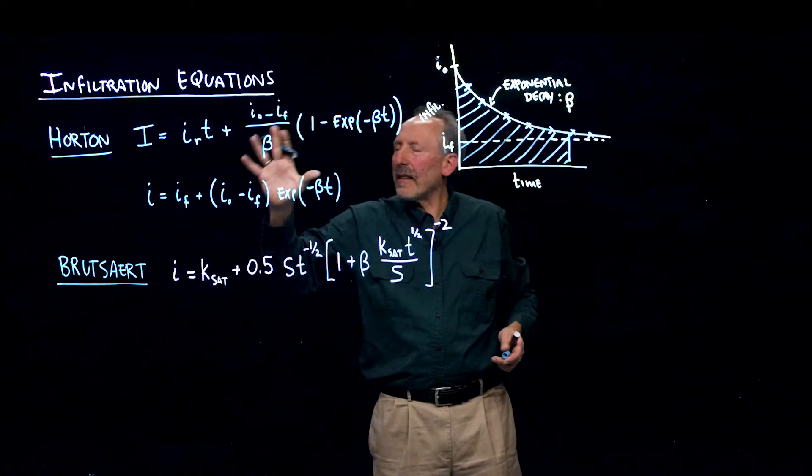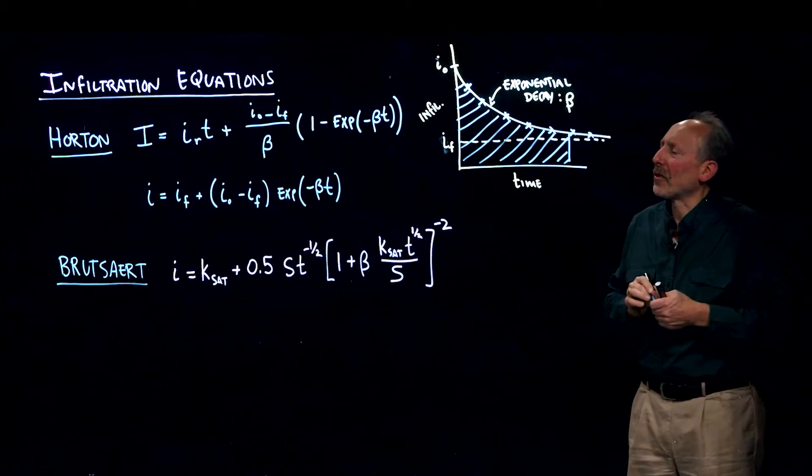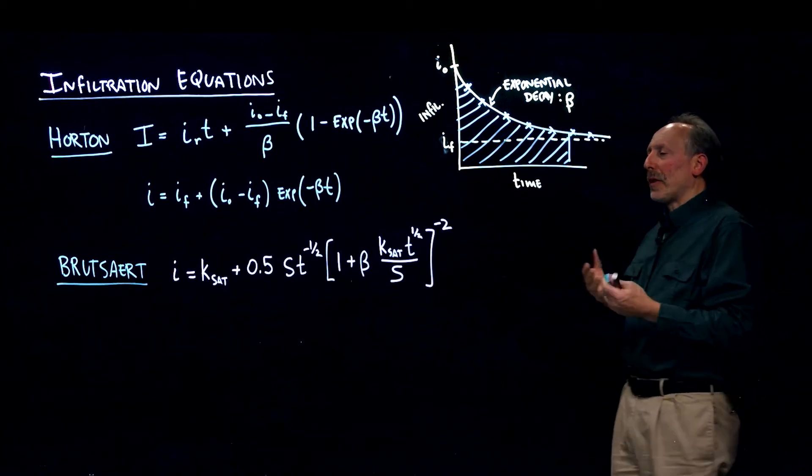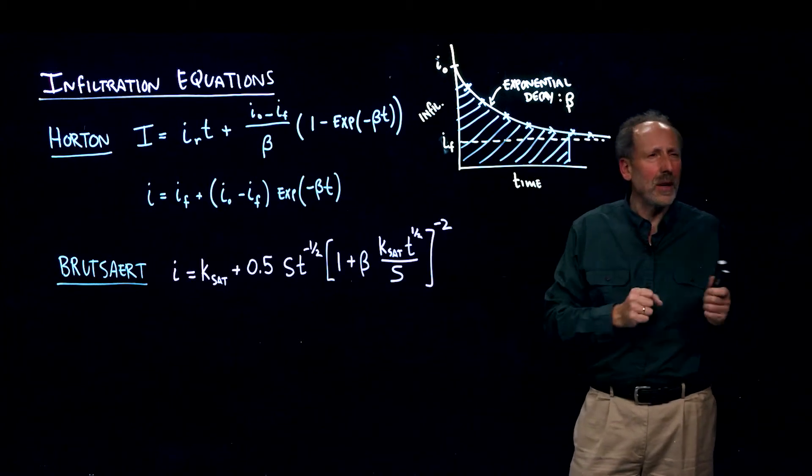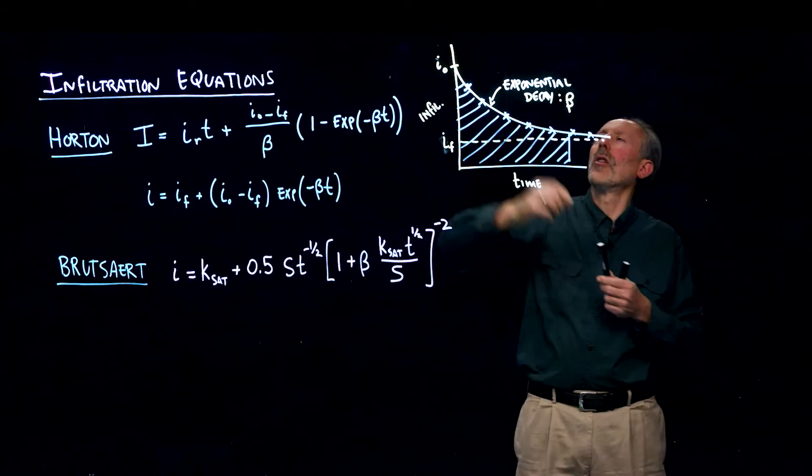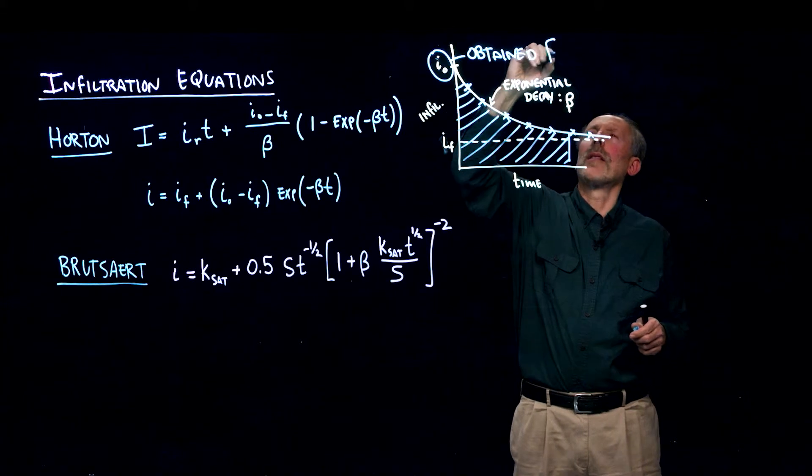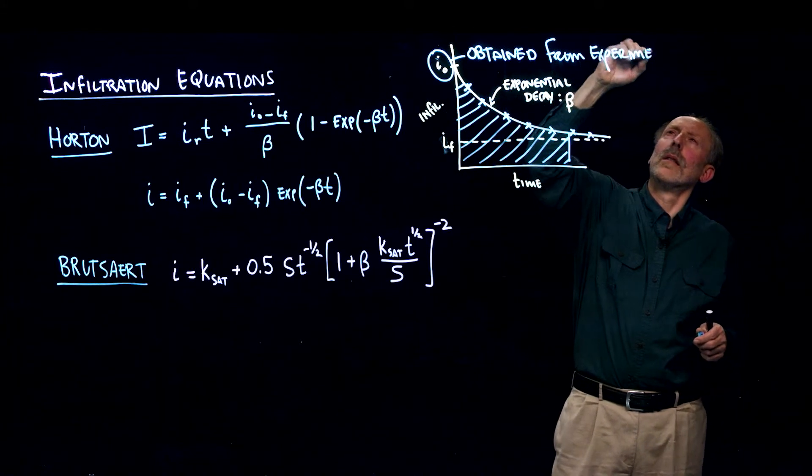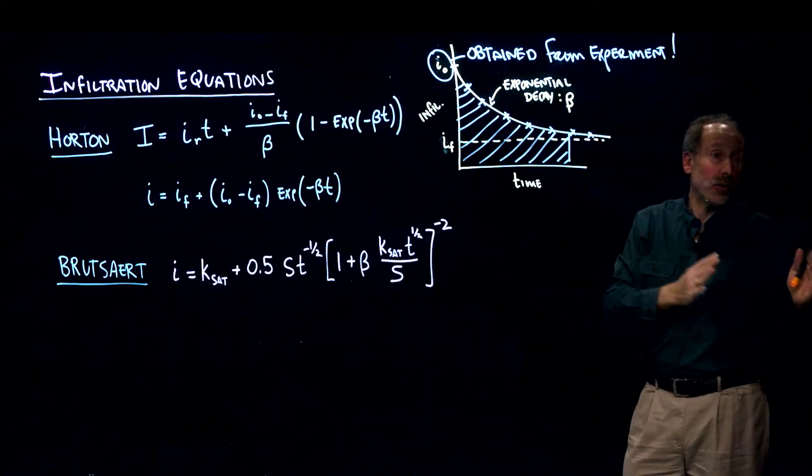So that's a fine model. Why would we look further? Horton found that this actually did a very good job of describing it. Well, for example, here's a model put forward by Brutzard. And what we notice is quite different about this model, is instead of using empirical parameters, these are obtained from an experiment. So we had to run an infiltration experiment, and we get an infiltration model.